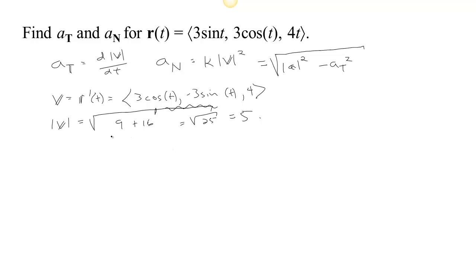So our speed in this case is 5. And a_T would be the change in speed. In this case the speed is constant, so a_T is 0. We're not accelerating tangentially at all — not speeding up or slowing down. Now we can find a_N, and we already have the velocity, so let's find the acceleration.